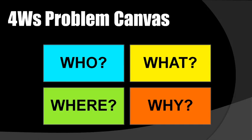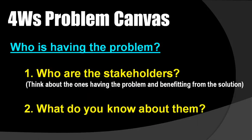Let us go through each of the blocks one by one. First is 'who.' The who block helps you analyze the people getting affected directly or indirectly by the problem. Who is affected by that problem? Who are the stakeholders? Think about those having the problem and those who would benefit from the solution — those are the 'who.' What do you know about them? This key element — the stakeholder — will be identified through the who block.